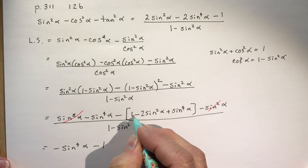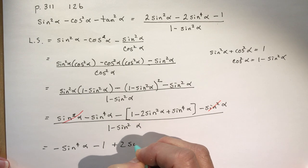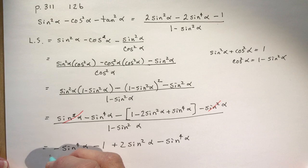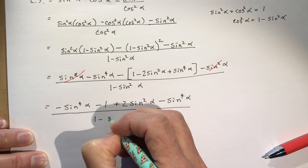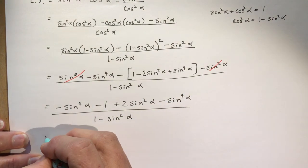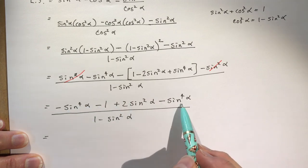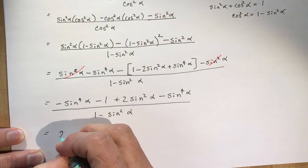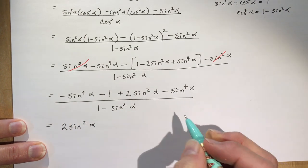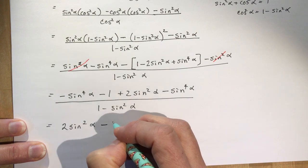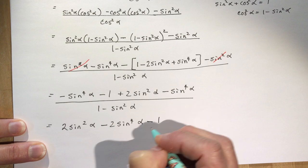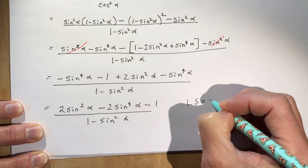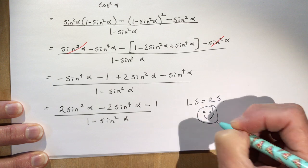So I have minus sine to the fourth alpha, and then — being careful with the minus sign — plus 2 sine squared alpha, minus sine to the fourth alpha, all over 1 minus sine squared alpha. And here we go — we have minus 1, minus 2 sine to the fourth, which is what we wanted. So writing it in the same order as the right-hand side: 2 sine squared alpha, minus 2 sine to the fourth alpha, minus 1, all over 1 minus sine squared alpha. Left side equals right side — hope that helped.